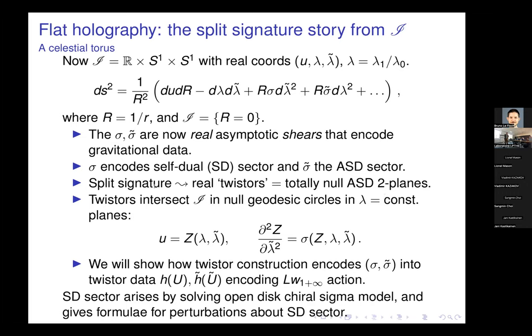Twisters will intersect scry in certain large geodesics — actually circles, because they are boundaries of two-planes in the interior. They satisfy a differential equation which, if you are familiar with the Newman work, is Ted Newman's good-cut equation — but he was thinking in Lorentz signature where it was an equation of holomorphy in z rather than an ordinary differential equation. What I'll show later is how the twister construction encodes the asymptotic shears into two functions on twister space in such a way that they encode the LW1-plus-infinity action.